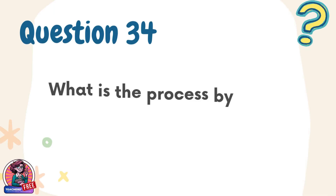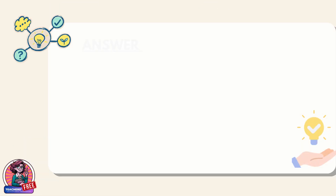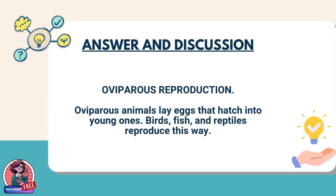Question 34. What is the process by which animals that lay eggs produce young? Answer: Oviparous reproduction. Oviparous animals lay eggs that hatch into young ones. Birds, fish, and reptiles reproduce this way.